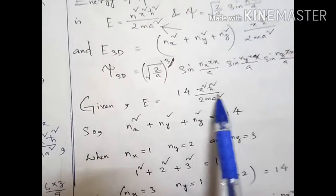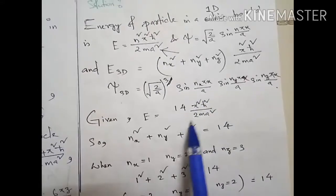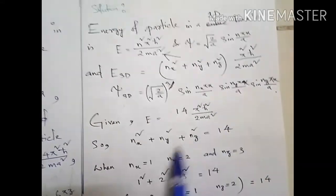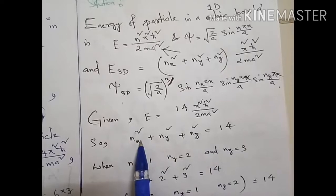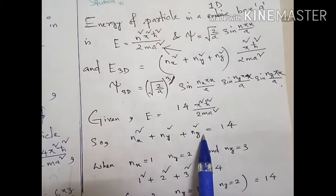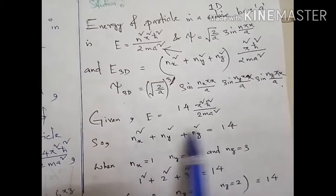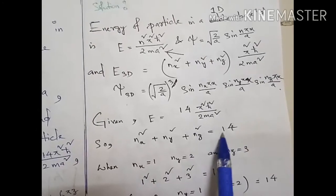If the energy is this much, then this should be equal to this energy. So for a certain combination of nx² + ny² + nz², this will give us 14.